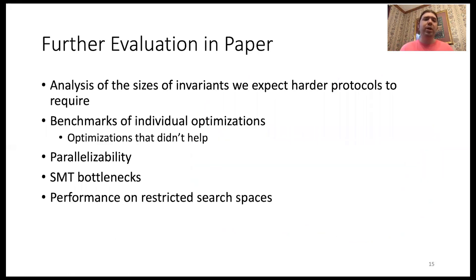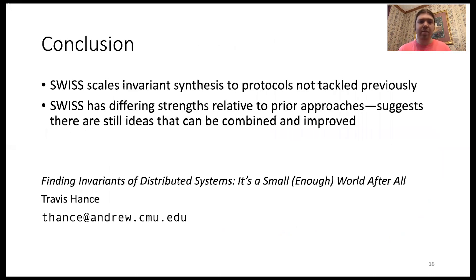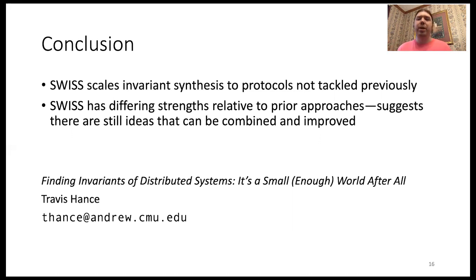Also in our paper, we measure individual optimizations as well as optimizations that turn out not to help. We quantify parallelizability, our use of SMT solvers, and SWISS's performance on restricted search spaces. In conclusion, SWISS is able to scale invariant synthesis to protocols not tackled previously. SWISS has differing strengths relative to prior approaches, suggesting there are ideas that can be combined to produce something better than any individual solution. I'm fairly optimistic about the future of this field. Thank you.